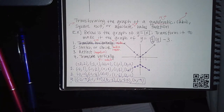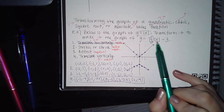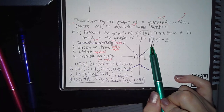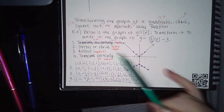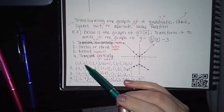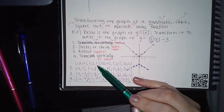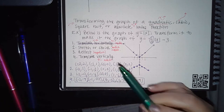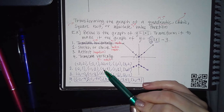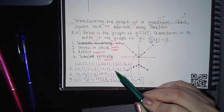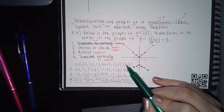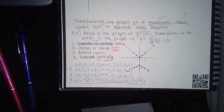Step two: stretch or shrink. Outside the absolute value I'm multiplying by one half, so I take each y value and multiply by one half. Two times one half is one; one times one half is one half; zero times one half is zero; and so on. Only the y values change — the x values stay the same throughout this step.